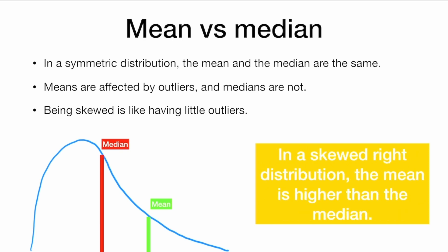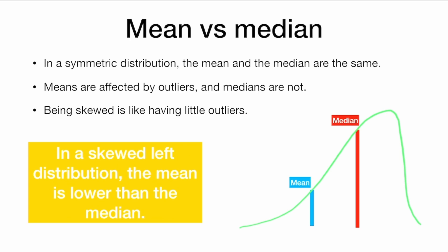So in a skewed right distribution, the mean is higher than the median. And in a skewed left distribution, the mean is lower than the median because the mean is dragged down by these little tiny outliers.